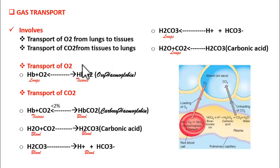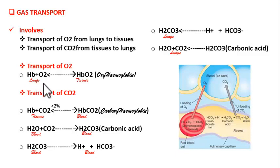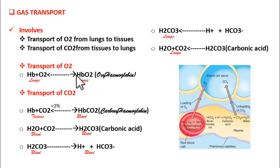Let us look at transport of oxygen. Oxygen from the lungs enters into blood. Inside blood there are RBCs, and RBCs contain hemoglobin — the red colored pigment. Oxygen combines with hemoglobin of RBC to form oxyhemoglobin (HbO₂), and in this form it is transported from lungs to tissues. At the tissue surface, the HbO₂ dissociates, releasing oxygen which then enters into the tissues.